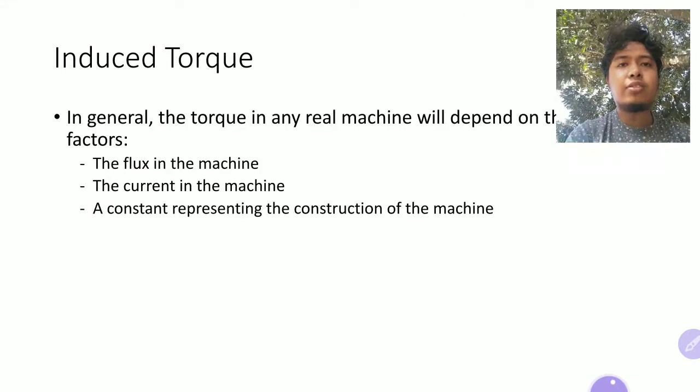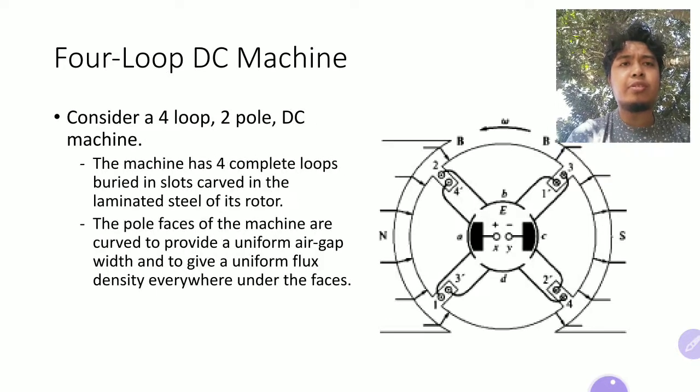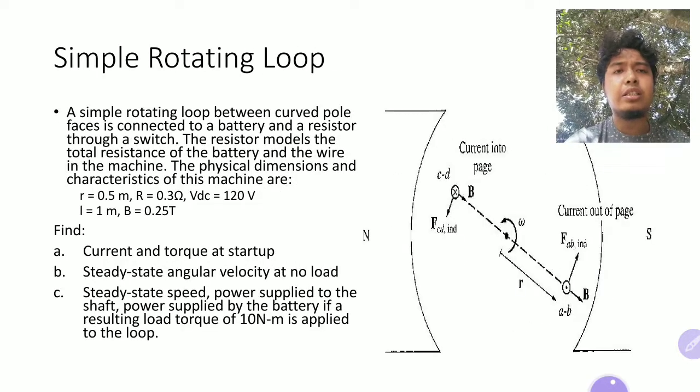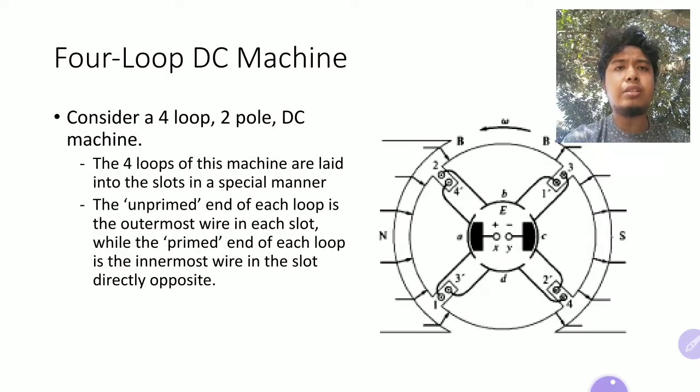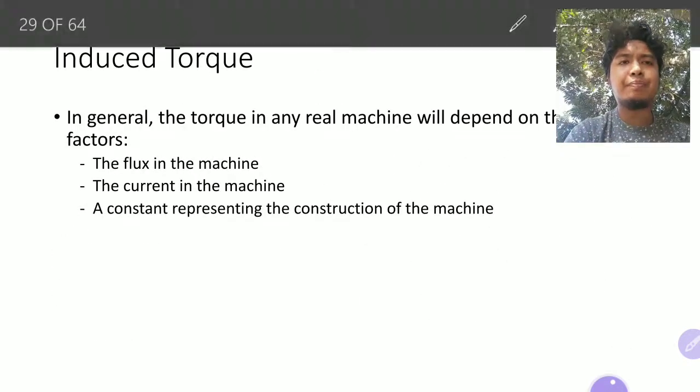So I think that's it for this torque. I have a few examples here. And then later on, we'll be talking about four loop DC machine.